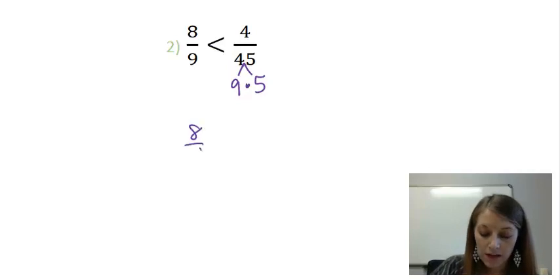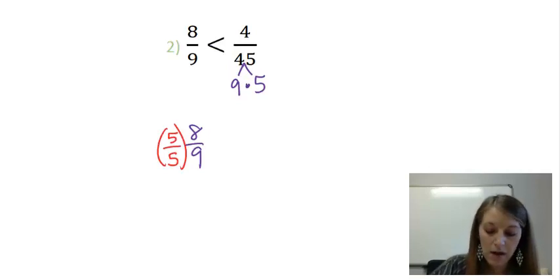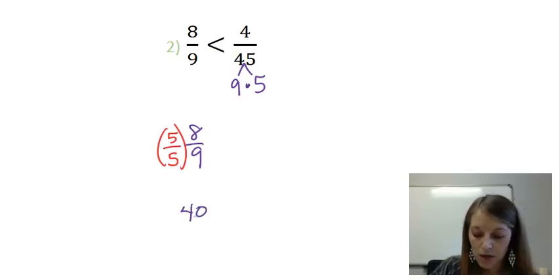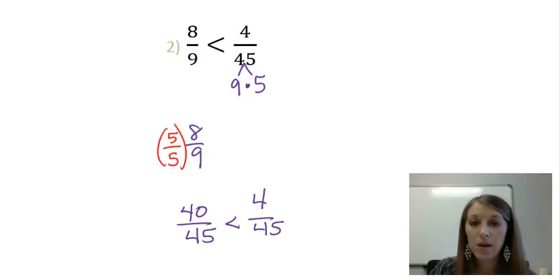So I'm going to take my left hand fraction, and I'm going to multiply it by the missing piece, which is 5 over 5. That gives me 40 over 45. And we want to see, is that less than 4 over 45?